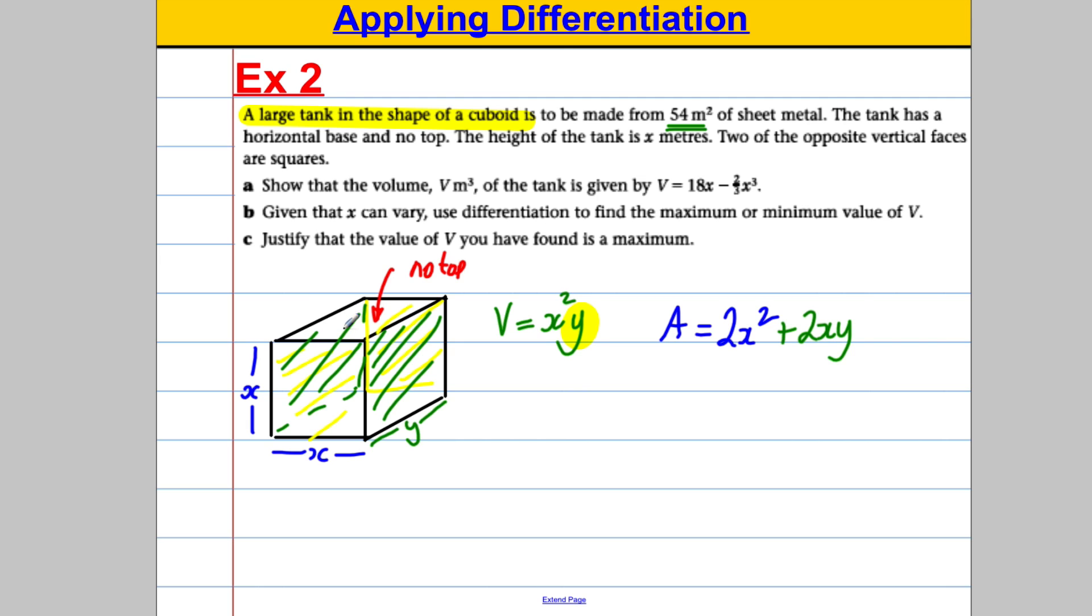And then, we're not going to have the top. Remember, we're told that the thing only has a bottom and that, again, is xy. So we have plus another xy, which we can simplify to area is equal to 2x squared plus 3xy. Now, we actually know the area. It's 54. So we can finish off by saying that 54 is equal to 2x squared plus 3xy.